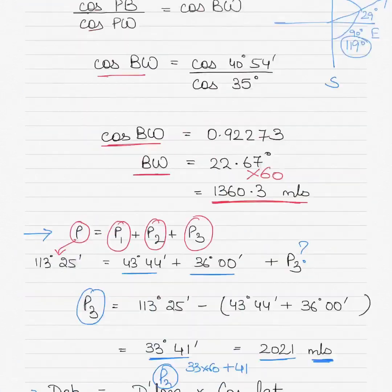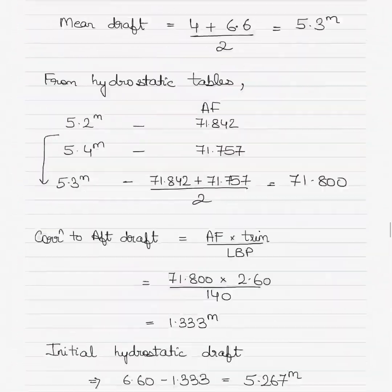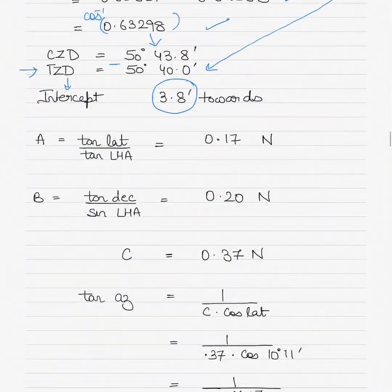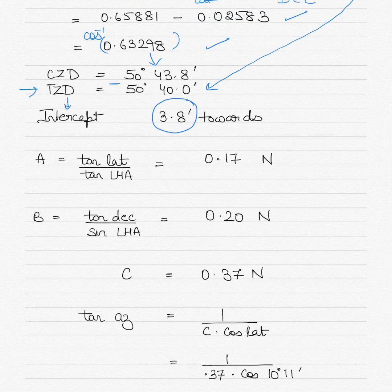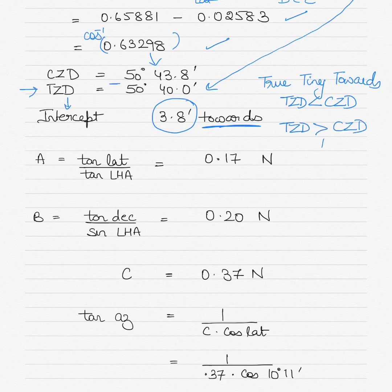The difference between CZD (50 degrees 43.8 minutes) and TZD (50 degrees 40 minutes) gives an intercept of 3.8 minutes, named Towards. If true zenith distance is less than calculated zenith distance, the intercept is named Towards; if true zenith distance is greater than calculated zenith distance, it is named Away. Since TZD was less than CZD, the intercept is Towards.